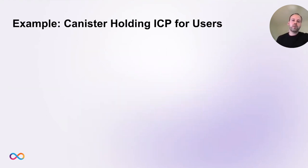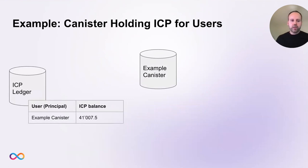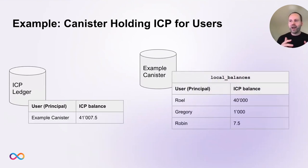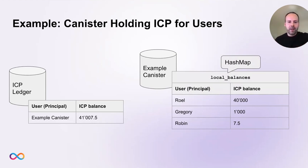Now I would like to introduce an example I'll use for the rest of my part of the talk: a canister holding ICP for users. We have an example canister and an ICP ledger — the canister has an account on the ledger holding some number of ICPs. The canister holds this ICP on behalf of users, tracking balances in a hash map — for example, Rule has 40,000 ICP, Gregory has 1,000 ICP, and Robin has 7.5 ICP.